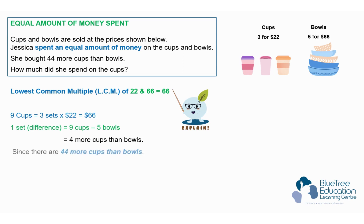So 44 is made up of many small sets. 44 divided by 4 will tell us that there are 11 sets.